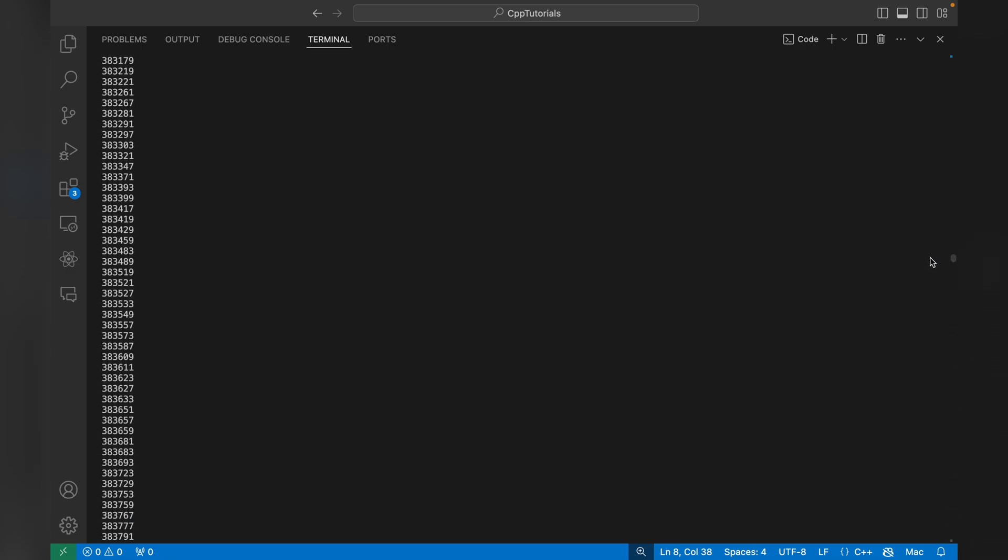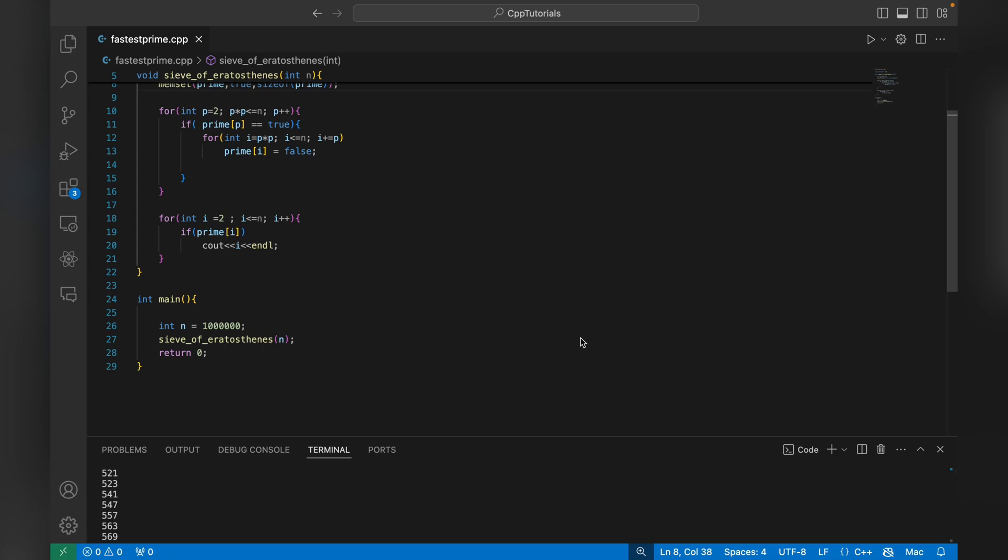If we try a lazy algorithm, or we can say basic algorithm, to find prime numbers between 0 and 1 million, this will take more than 3 to 4 minutes. So we'll see this in the next part of this video.